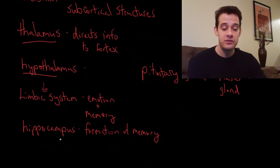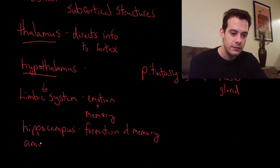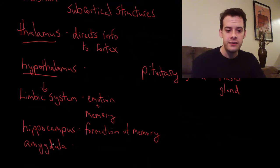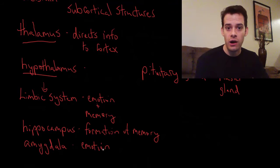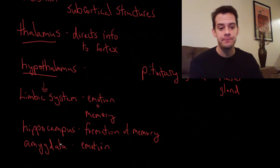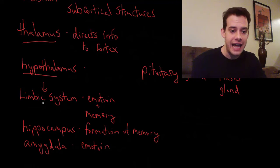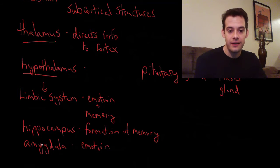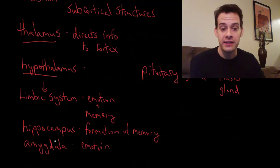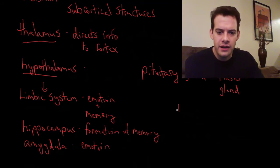Next to the hippocampus we find the amygdala — Latin for almond — and the amygdala is responsible for emotion. When you experience intense fear or a strong emotion, you'll have activation of the amygdala. Together, these three structures — the hypothalamus, the hippocampus, and the amygdala — all work together to do things like store memories of emotional events. That's the limbic system.